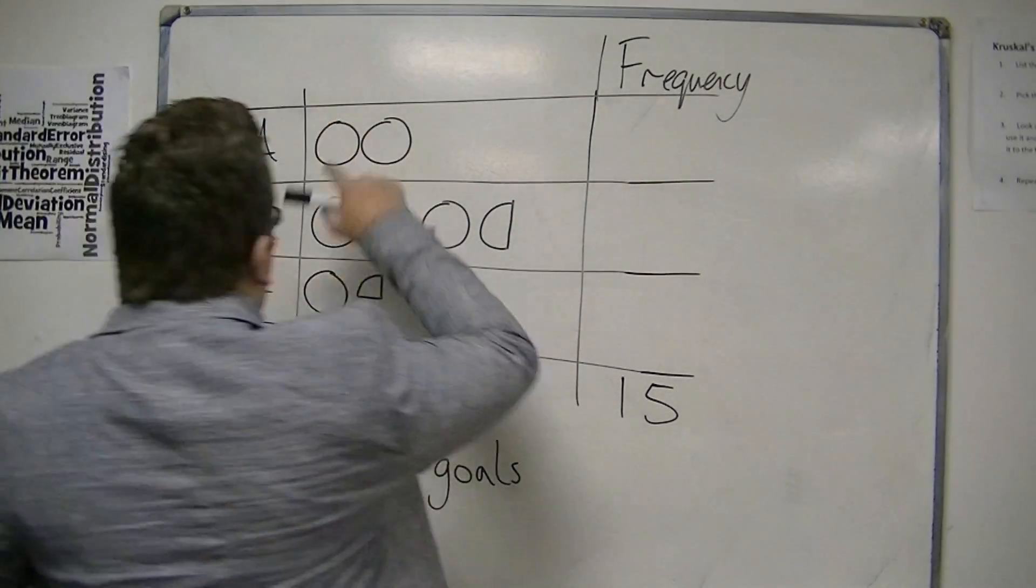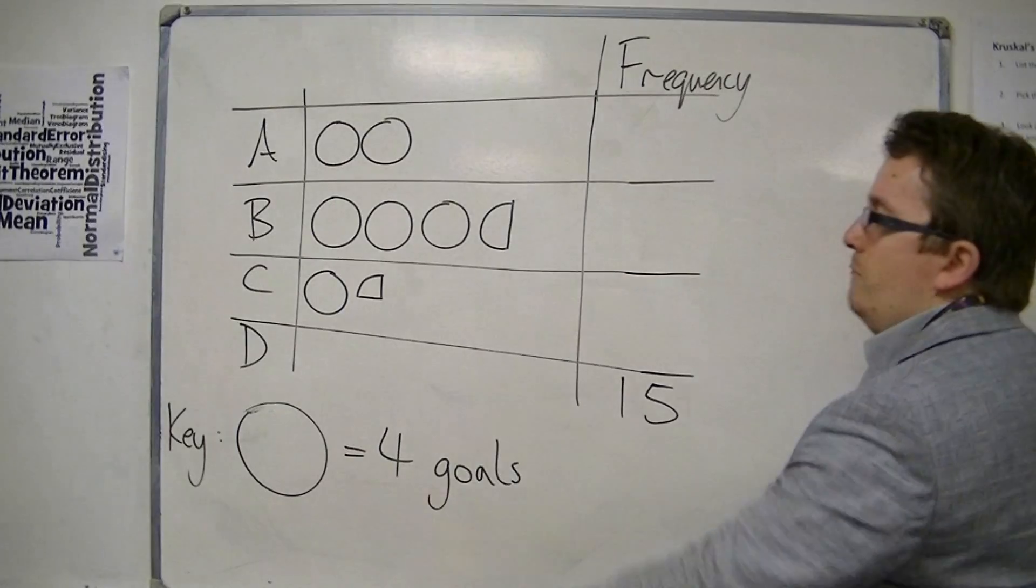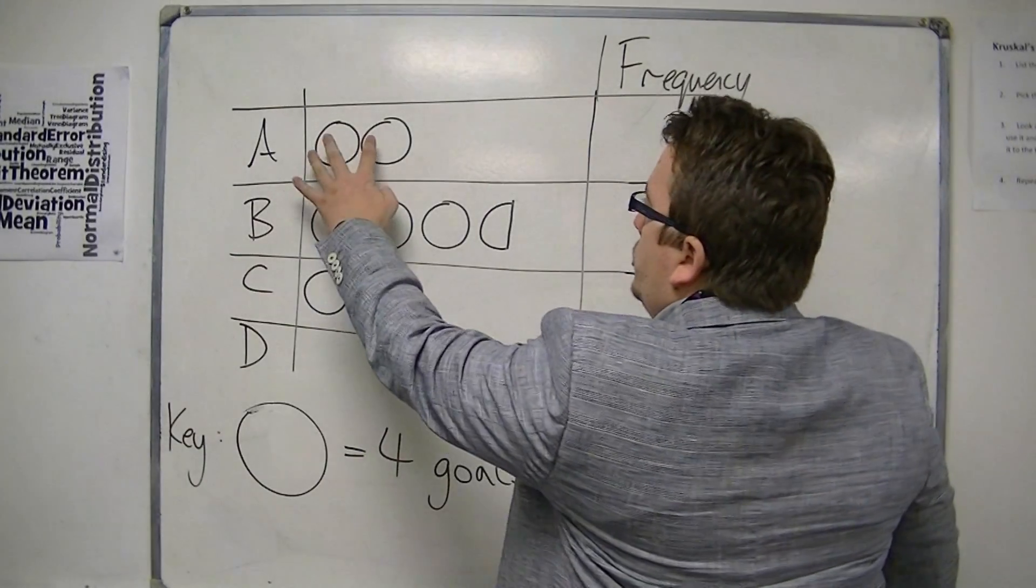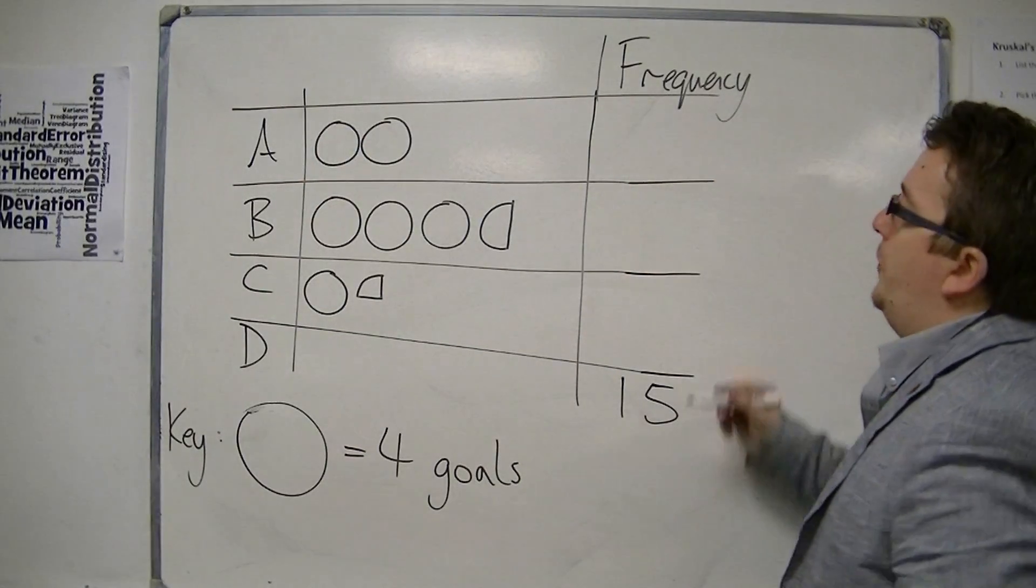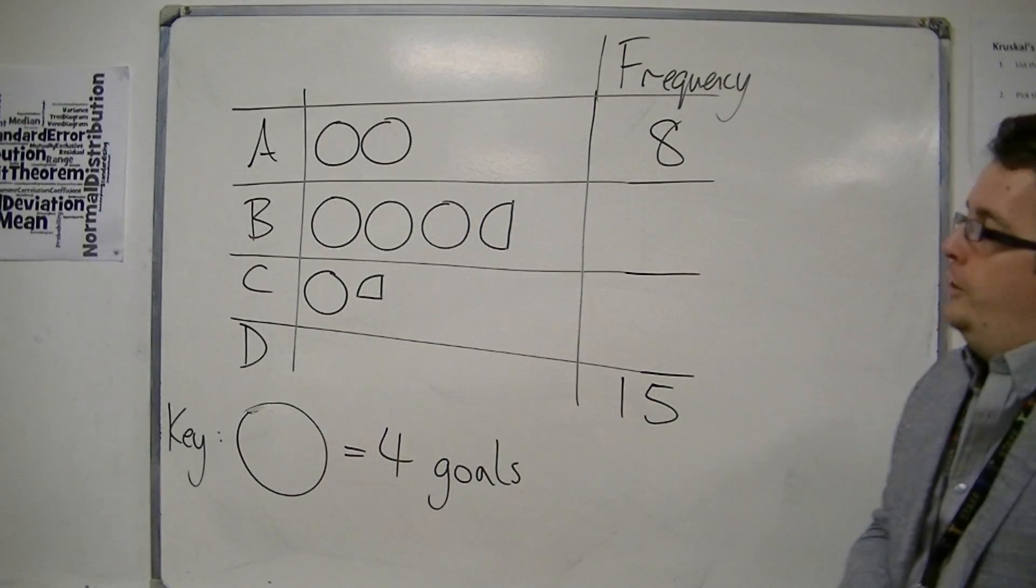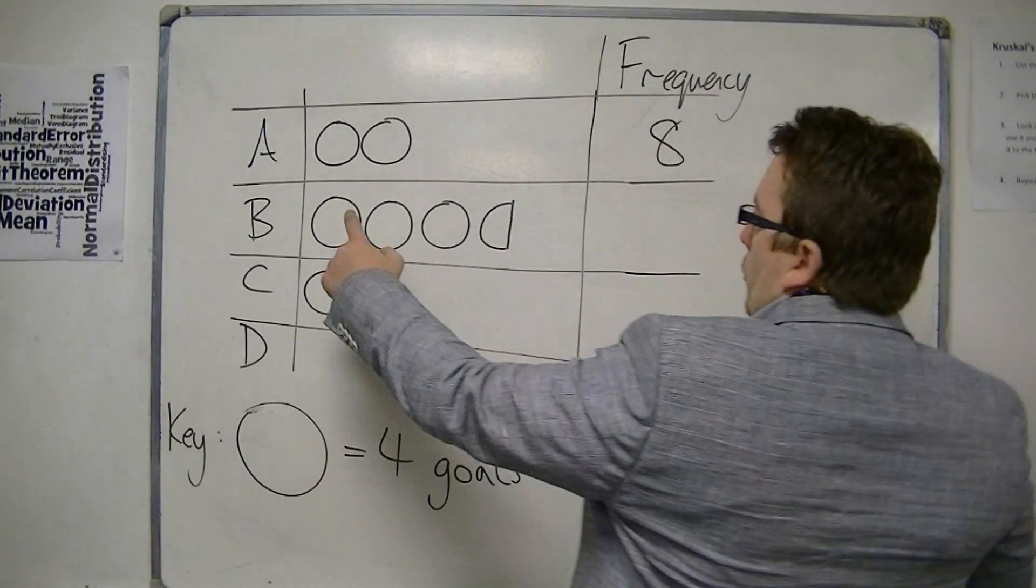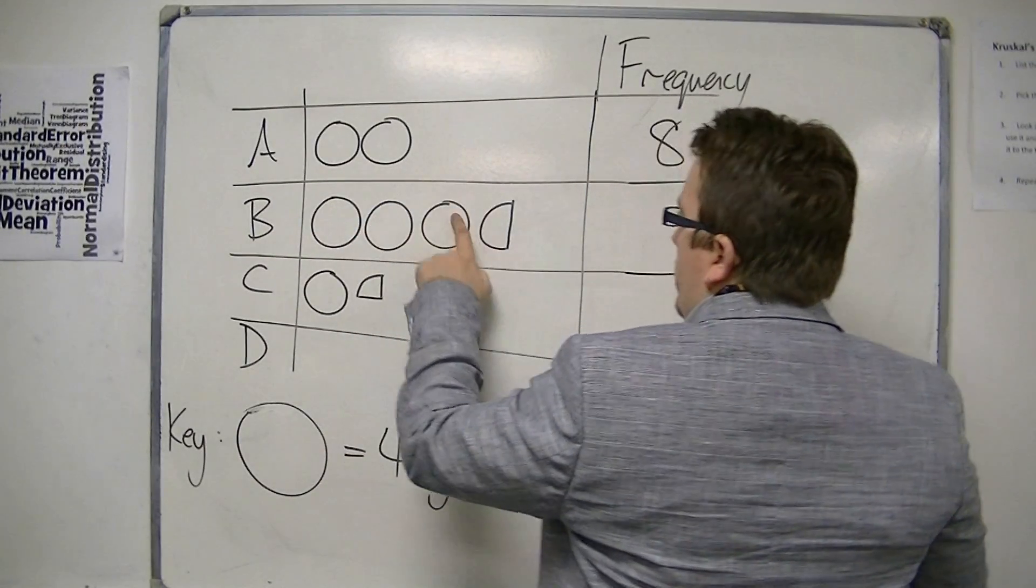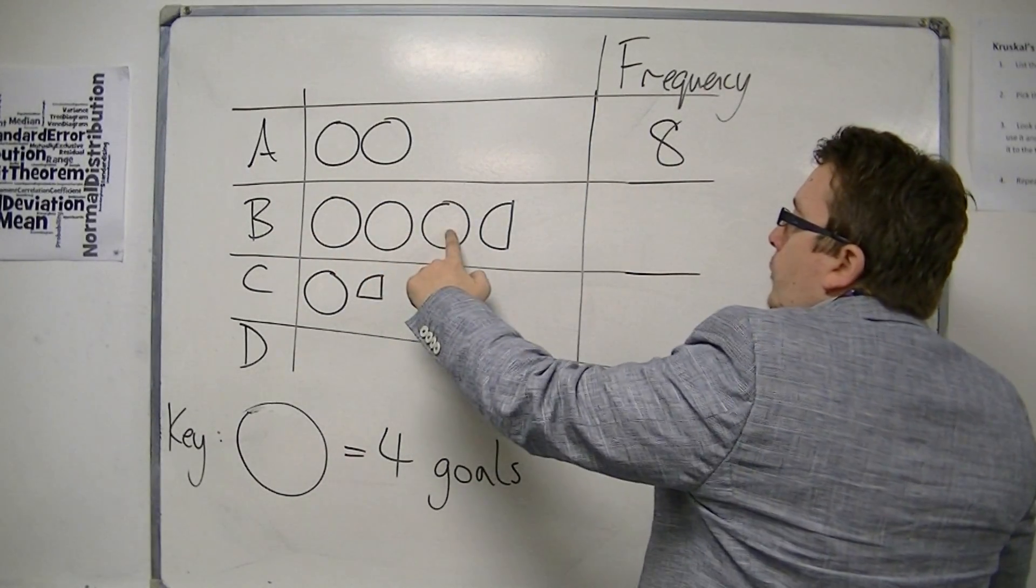So if one circle represents four goals, then two circles must represent eight goals. OK. That's nice and easy. For player B, we've got four goals, another four goals, another four goals, so that's twelve goals.